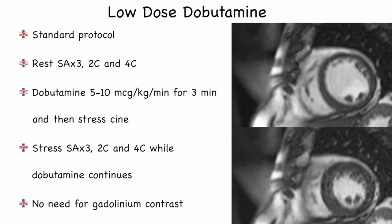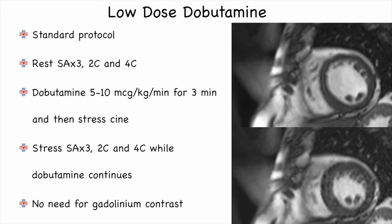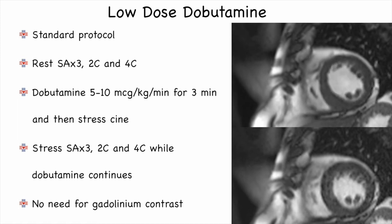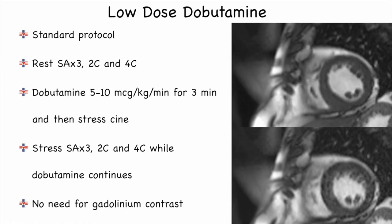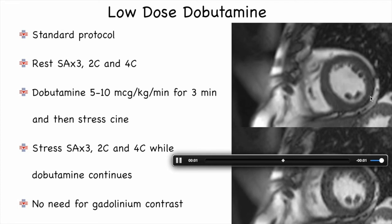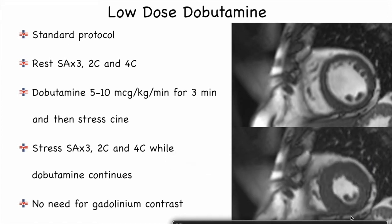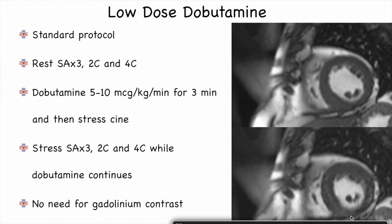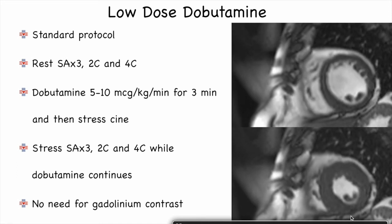Low-dose dobutamine is used in cases of acute presentation or when delayed enhancement is not conclusive. We start dobutamine infusion at 5 to 10 micrograms per kilogram per minute for 3 minutes, then acquire short axis images at basal, mid, and apical cavity, plus two-chamber and four-chamber views while the infusion continues. In this image, you can see an area of hypokinesis in the inferior segments at rest; once low-dose dobutamine is given, the same segment shows improved contractility, confirming it as a viable segment. Gadolinium is not required for this assessment.